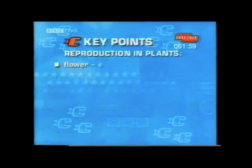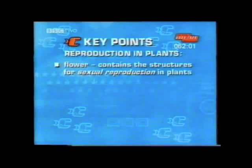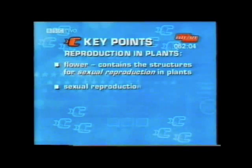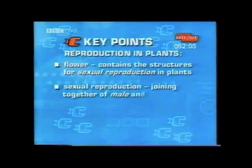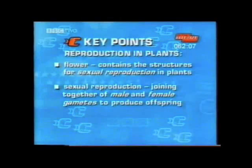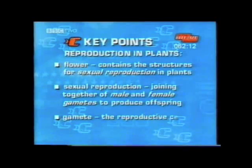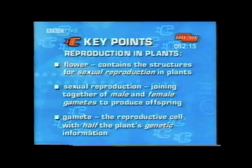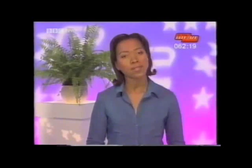The flower contains the structures for sexual reproduction in plants. Sexual reproduction is the joining together of male and female gametes to produce offspring. A gamete is the reproductive cell with half the plant's genetic information. Let's summarise reproduction in flowering plants.